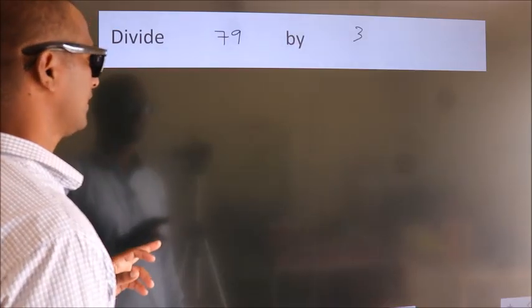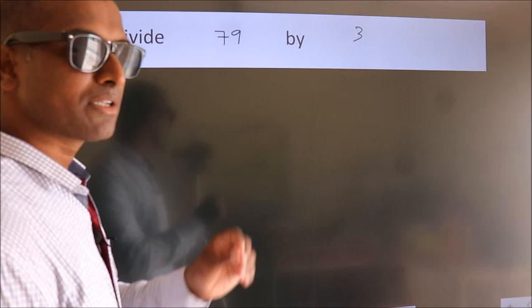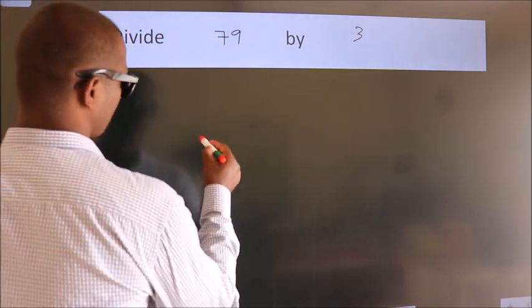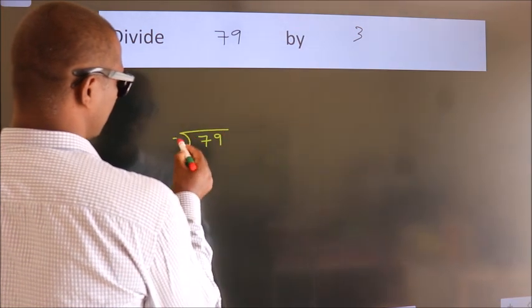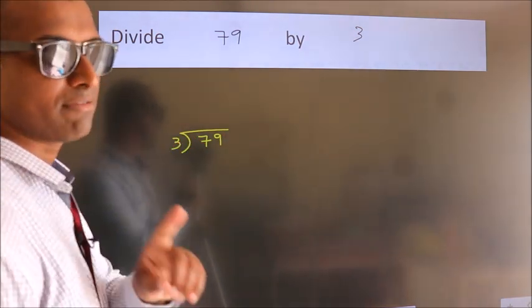Divide 79 by 3. To do this division we should frame it in this way. 79 here, 3 here. This is your step 1.